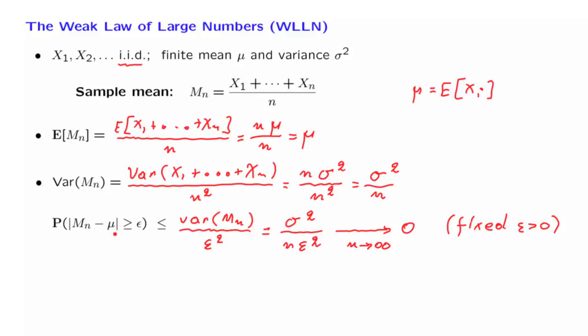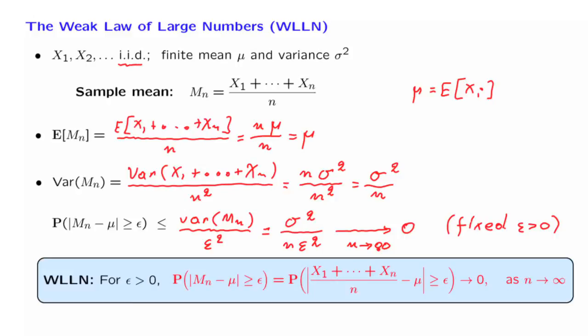So the probability of falling far from the mean diminishes to 0 as we draw more and more samples. That's exactly what the weak law of large numbers tells us. If we fix any particular epsilon, which is a positive constant, the probability that the sample mean falls away from the true mean by more than epsilon, that probability becomes smaller and smaller and converges to 0 as n goes to infinity.